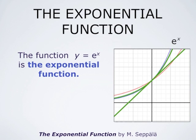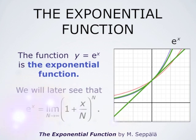The function e to the power x is called the exponential function. We will later see that this exponential function e to the x can be defined as the limit as n goes to infinity of 1 plus x over n, raised to the power n. In this video I will show the argument that Euler had for this result, and later in this course we will give a rigorous proof of this fact.